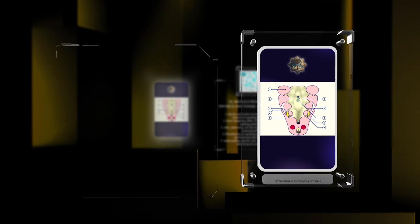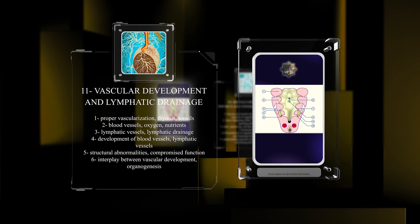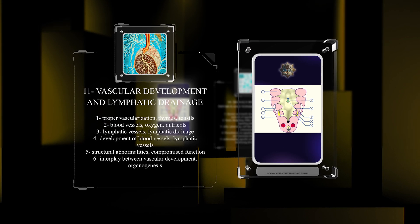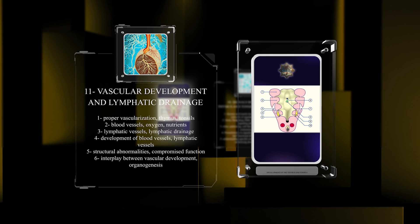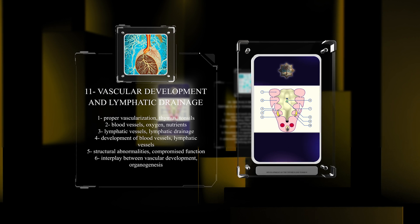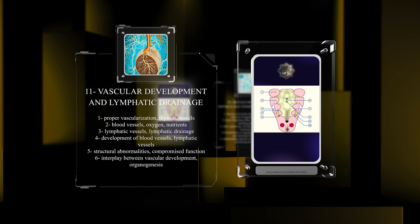Proper vascularization is essential for the functions of the thymus and tonsils. Blood vessels provide oxygen and nutrients, while lymphatic vessels ensure proper lymphatic drainage. The development of blood vessels and lymphatic vessels within these organs is a precisely regulated process.